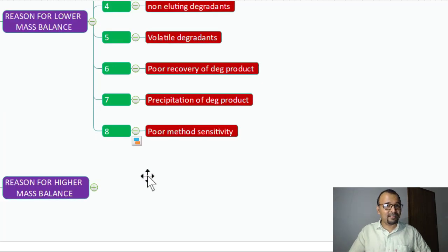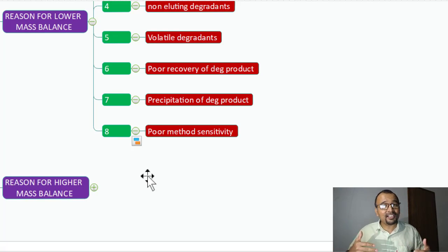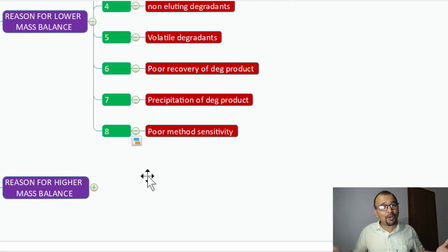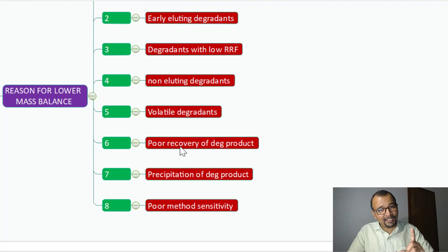Poor method sensitivity. If your method is not sensitive enough to detect all the small degradants generated during the forced degradation study, those small peaks which are not getting detected will be lost. You should understand your situation and identify which of these reasons is the most relevant scenario for your case.